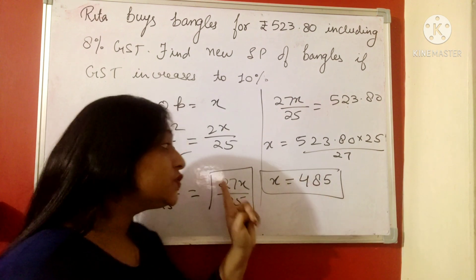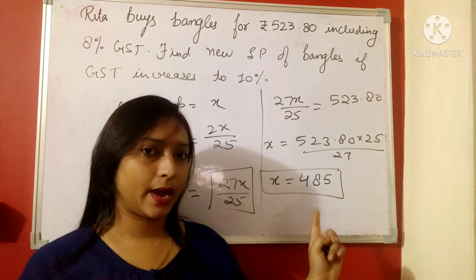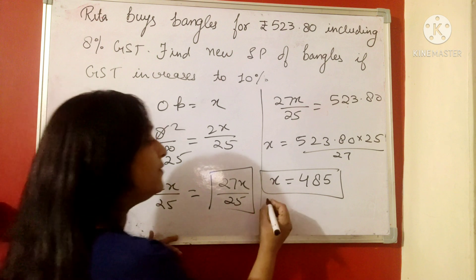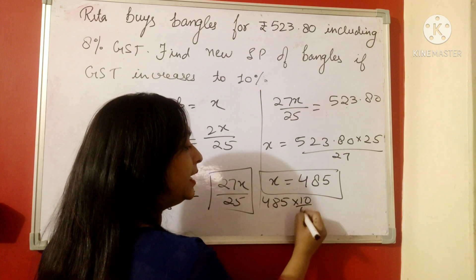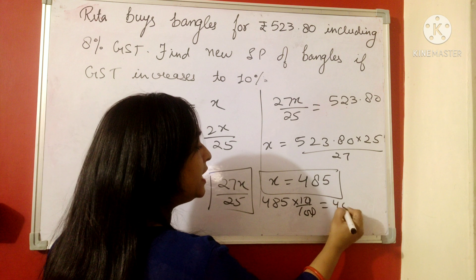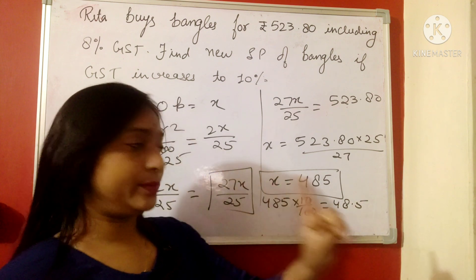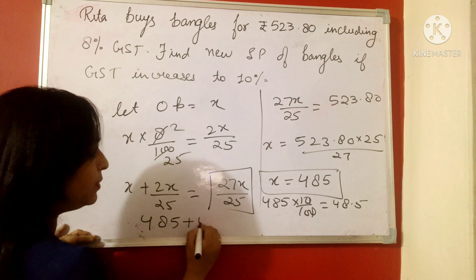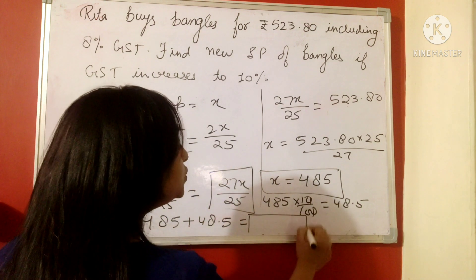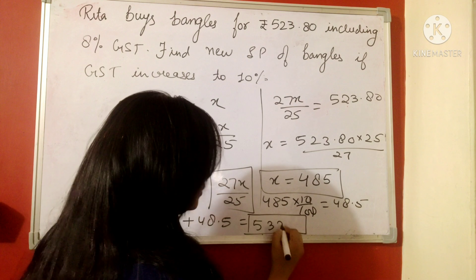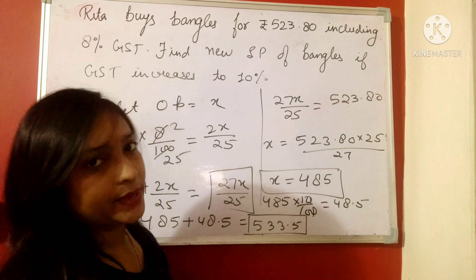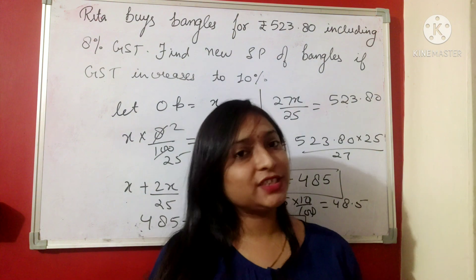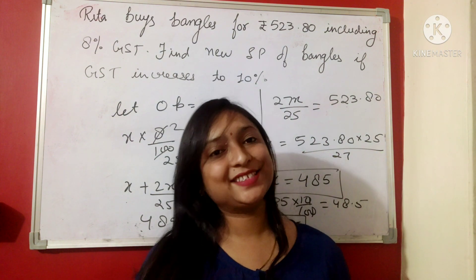Solving, we get x equals 485. This 485 is the original amount before the GST. Now on this 485, a 10 percent GST is added, so 48.5 GST will be added. The new selling price will be 485 plus 48.5, which is 533.50 rupees. This was all about GST — thank you so much for watching this video, like, share, and subscribe to my channel.